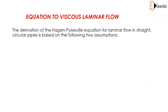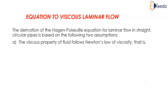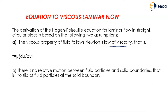The derivation of the Hagen-Poiseuille equation for laminar flow in straight circular pipes is based on the following two assumptions. First, the viscous property of fluid which follows Newton's law of viscosity, i.e. tau is equal to mu du upon dy. Second, there is no relative motion between fluid particles and solid boundaries, i.e. no slip of fluid particles at the solid boundary.